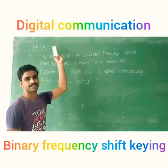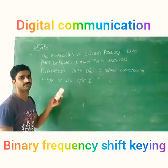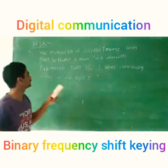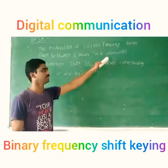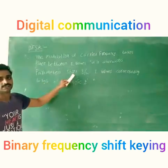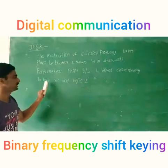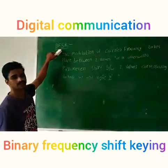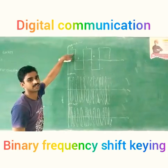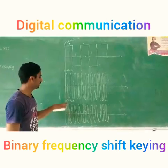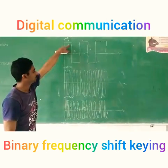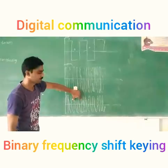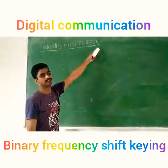I am explaining about the topic binary frequency shifting. Frequency shifting is defined as the model where the carrier frequency takes place between two values. In other words, parameters shift between two values corresponding to logic 0 and logic 1 — this is called binary frequency shift keying. The message signal is multiplied with the carrier signal and generates the FSK output. At logic 1 it generates high frequencies, and at logic 0 it generates low frequencies.